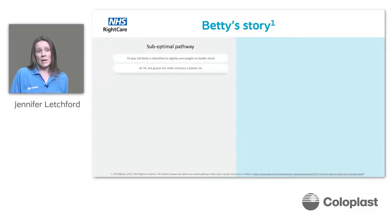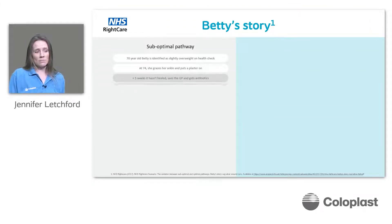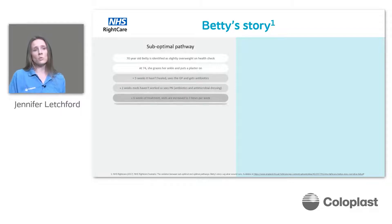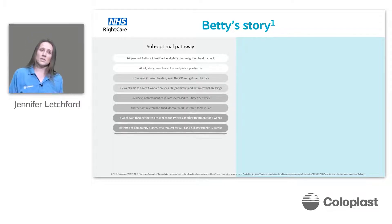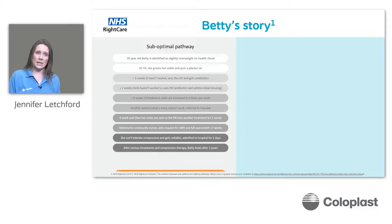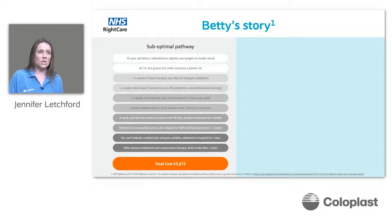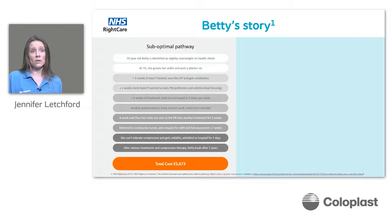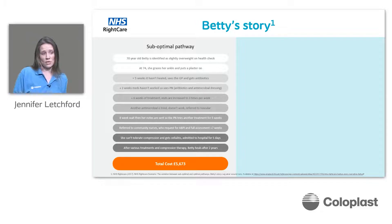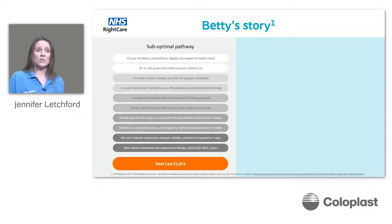I want to talk about Betty's story and a suboptimal versus optimal pathway of care. In the suboptimal pathway of care, Betty was seen at 70 years old in a health check and was recognised as being overweight. At 74, Betty went on to graze her ankle and just put a plaster on it. Five weeks later, that hadn't healed and she went to see her GP.